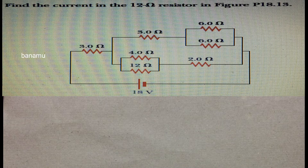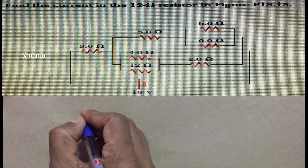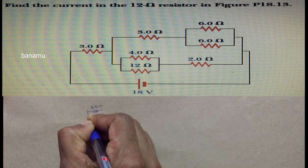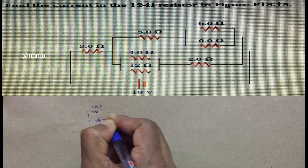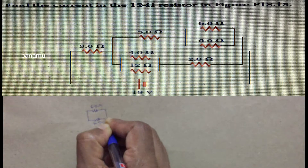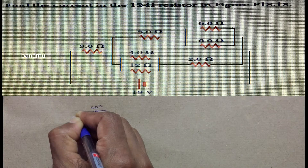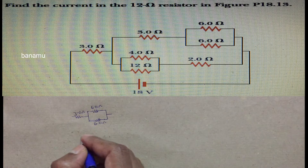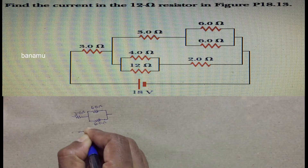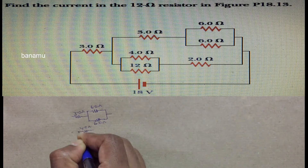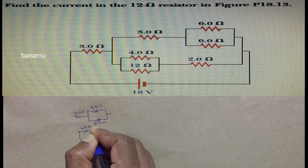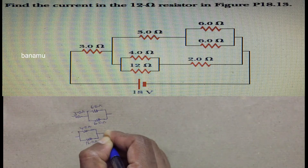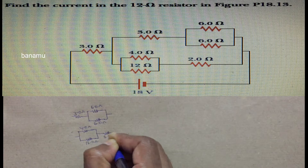Find the current in the 12 ohm resistor in the figure. In the upper part of the circuit, 6 ohm resistance and another 6 ohm resistance are connected in parallel, and that parallel combination is connected to a 3 ohm resistance in series. In the lower part, a 4 ohm resistance and 12 ohm resistance are connected in parallel, and that parallel circuit is connected to a 2 ohm resistance in series.